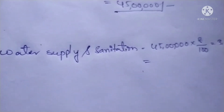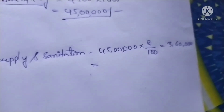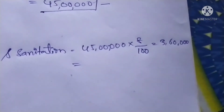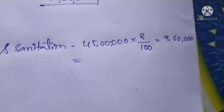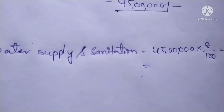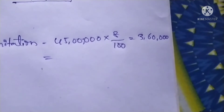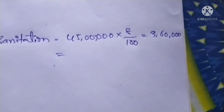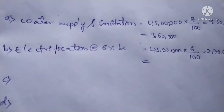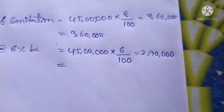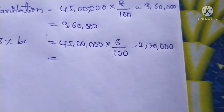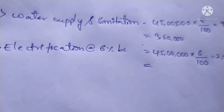Now I am going to calculate the provisions. Water supply and sanitation is 8% of building cost: 45 lakhs into 8 divided by 100 equals 3 lakhs 60 thousand rupees for water supply and sanitation cost. Electrification charges is 6% of building cost: 45 lakhs into 6 divided by 100 equals 2 lakhs 70 thousand rupees for electrification charges.